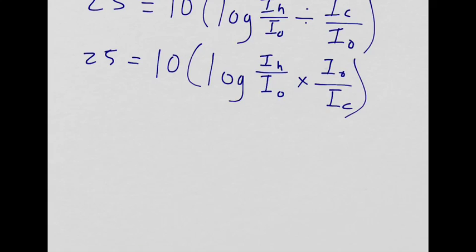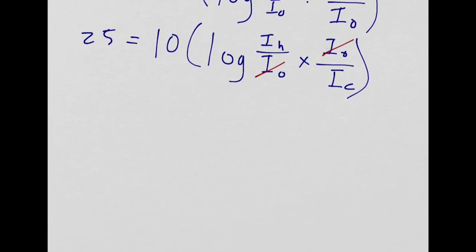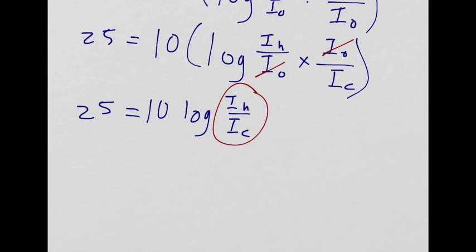This is nice because I don't even have to worry about using 10 to the negative 12 in any of my calculations. Those just cancel, right? So that gives me 25 equals 10 log IH over IC. This is the fraction that I wanted because that compares the intensity of the headphones to the intensity of the chainsaw. Now I just need to manipulate it so that I have this fraction equals something.